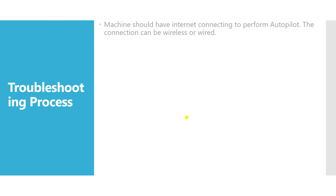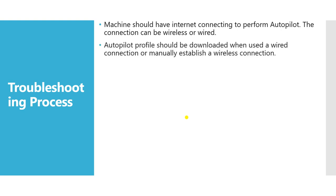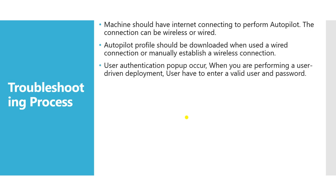Here is the troubleshooting process for autopilot issues. We need to take precautions for a few things when doing autopilot. First, the machine should have an internet connection — either wired or wireless — to perform the autopilot. The autopilot profile should download over a wired connection or a manually established wireless connection, so you need a stable connection.